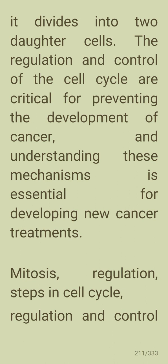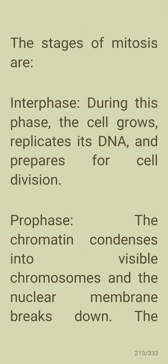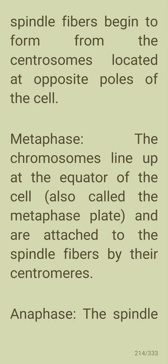Mitosis is a type of cell division that occurs in somatic cells — non-reproductive cells — to produce two genetically identical daughter cells. The stages of mitosis begin with interphase, during which the cell grows, replicates its DNA, and prepares for division. In prophase, chromatin condenses into visible chromosomes, the nuclear membrane breaks down, and spindle fibers begin to form from the centrosomes located at opposite poles of the cell.